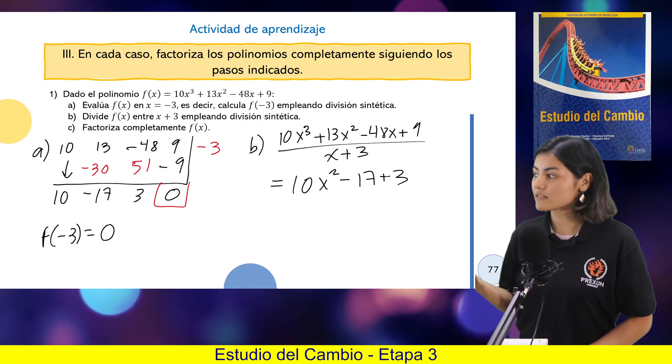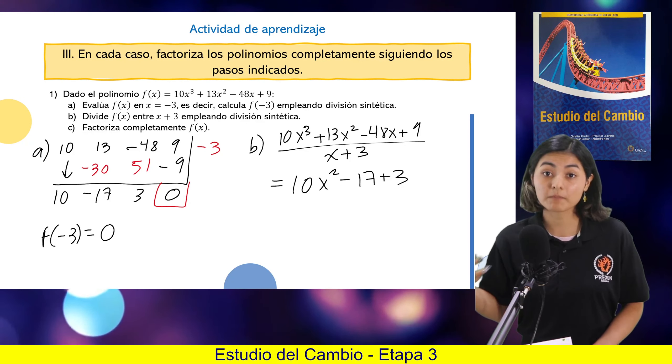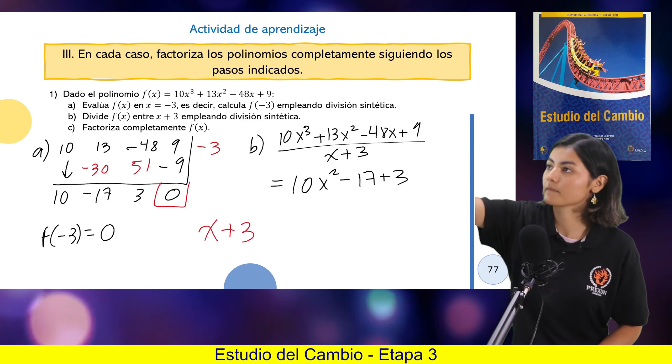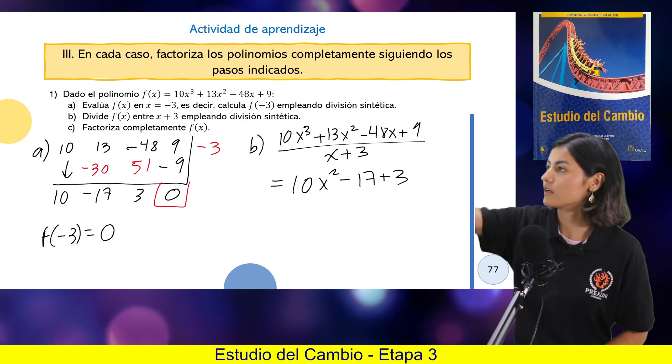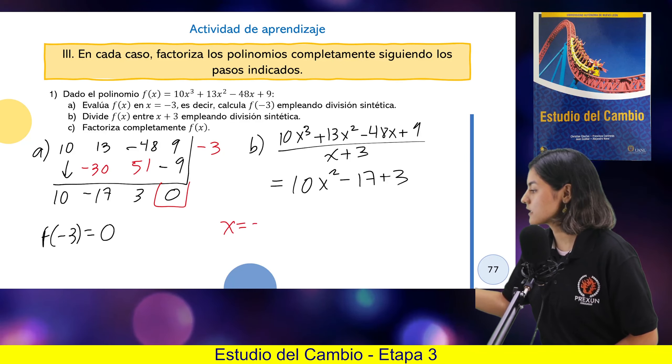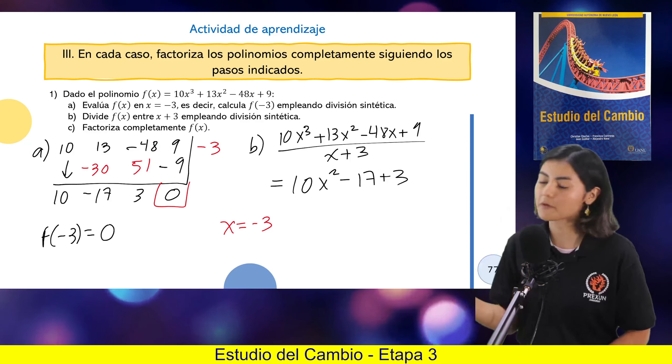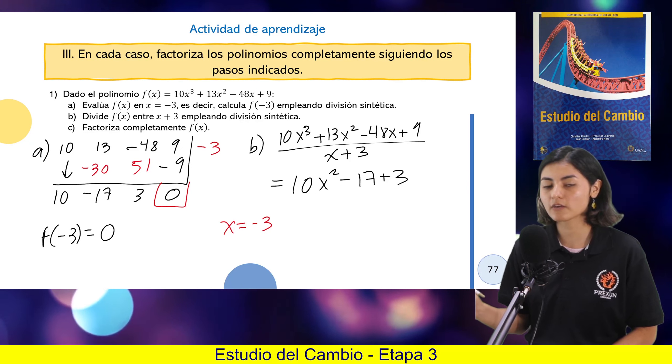Entonces el menos 3 es una raíz de ese polinomio y por ende el x más 3. Para que quede un poquito más claro, x igual a menos 3 es una raíz. ¿Por qué? Porque al evaluarlo me da cero. Al evaluar mi punto me da cero, entonces ese punto es una raíz.